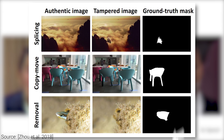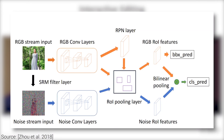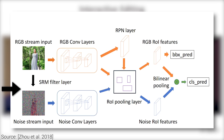So what does this mean exactly? This means a learning algorithm that looks at, one, the color data of the image to try to find unnatural contrast changes along edges and silhouettes, and two, the noise information within the image as well, and sees how they relate to each other.